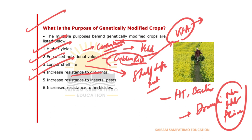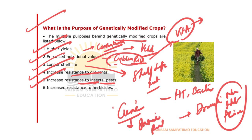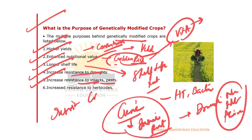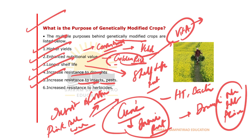GMO crops show increased resistance to insects and pests. Genes from Bacillus thuringiensis contain both insect-resistant and pest-resistant genes, which are inserted into the GMO crops. For example, Bt cotton is very resistant against the pink bollworm, which is the most damaging organism for cotton plants in India. GM crops also have increased resistance to herbicides and pesticides.